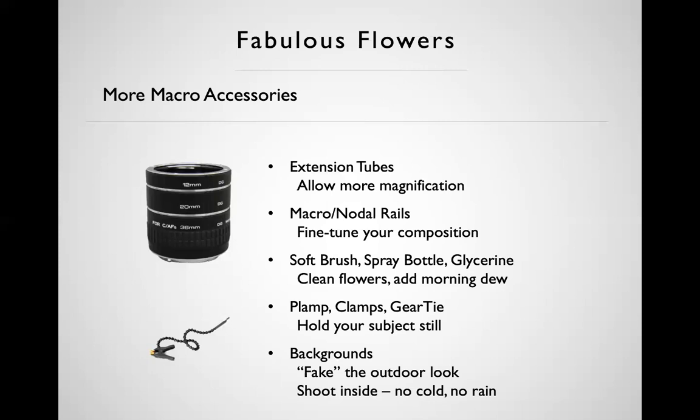Macro rails — or nodal rails — range from $50 to over $1,000. Some are geared, some aren't; some move one direction, some two or even three directions; some are fully automated and electronic. I don't carry them outdoors, but I use them indoors for really tiny subjects greater than life-size where I need very precise camera positioning. Other useful accessories: the glycerin-and-water spray for fake dew, and a soft makeup or paint brush to clean out flowers before shooting to save time in Lightroom or Photoshop later.